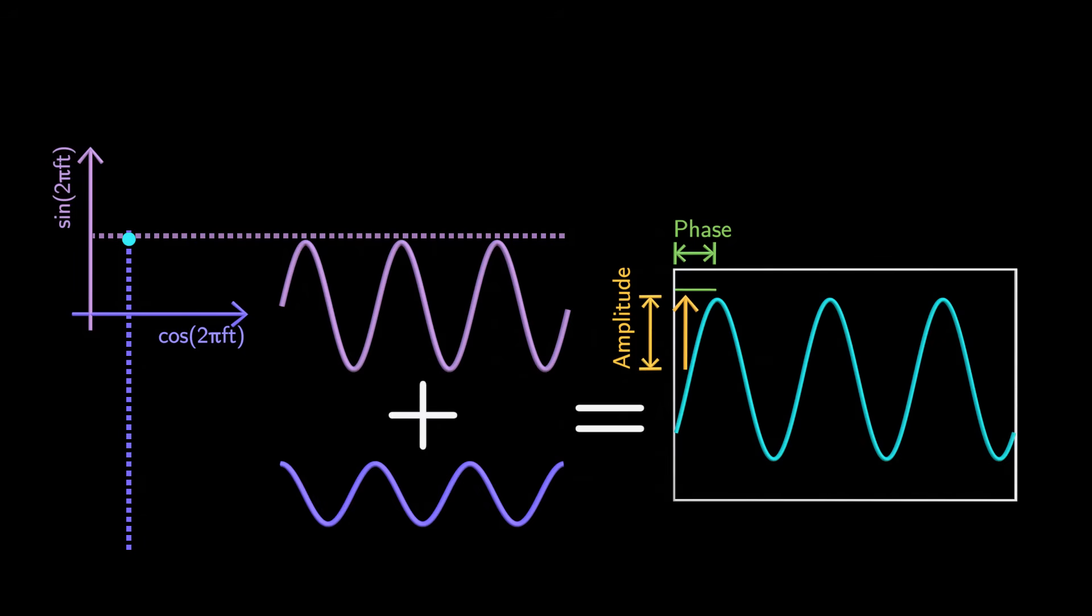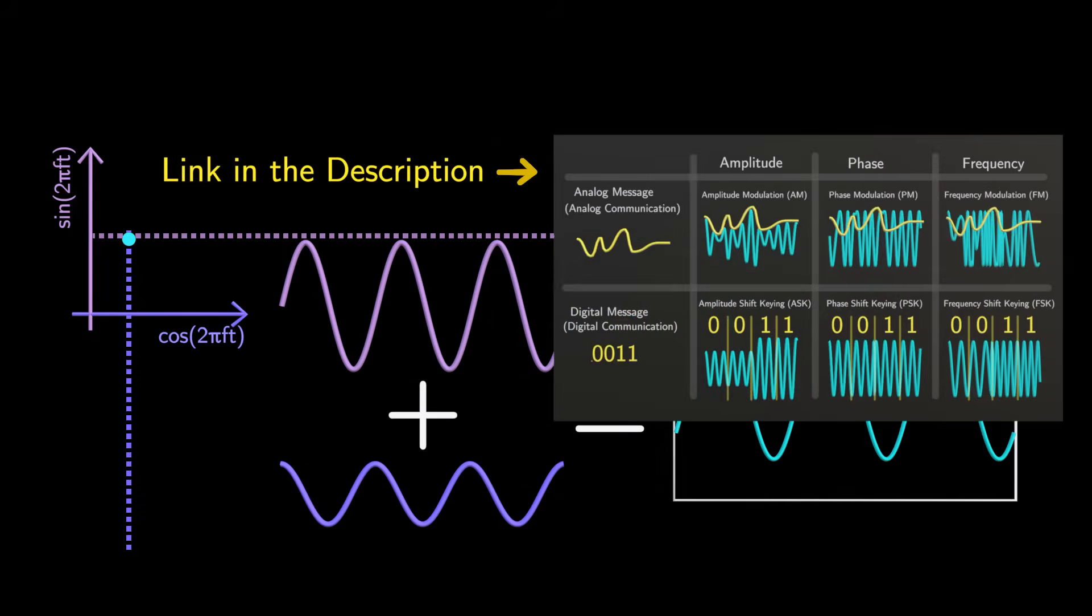Keep in mind that f represents the frequency of the wave, which we're assuming to be constant for now. You can ignore this for the moment. We can encode information into the amplitude and phase of the wave, just like I mentioned in my previous video.